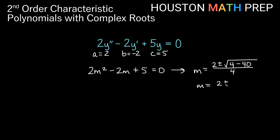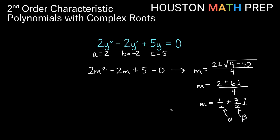Simplifying the root gives the square root of negative 36. The square root of 36 is 6, and because it's negative it becomes 6i. So we have 2 plus or minus 6i all over 4. Splitting into two pieces: 2 over 4 is one-half, and 6 over 4 is three-halves. So alpha is one-half and beta is three-halves. Our solution is e to the (x over 2) times the quantity c1 cosine of (3x over 2) plus c2 sine of (3x over 2).